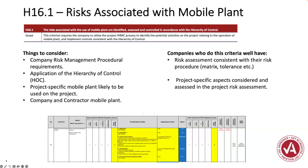Running through the criteria one by one — companies who do this criteria well start with the risk approach associated with mobile plants. All H criteria start with a risk-associated criteria and end with an emergency procedure criteria, and H16 is no different. The things to consider with H16-1 include the company risk management procedural requirements — what does your system say about how we understand risks at a project level? All the point-one criteria start with application of the hierarchy of control and how you apply that.